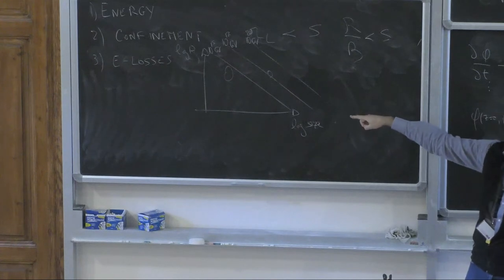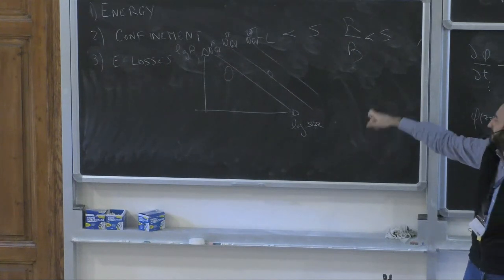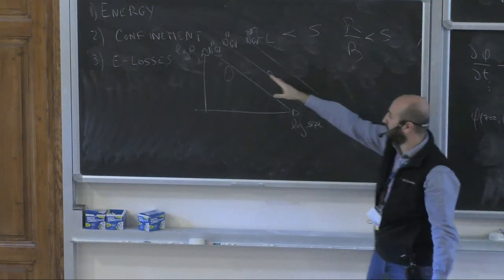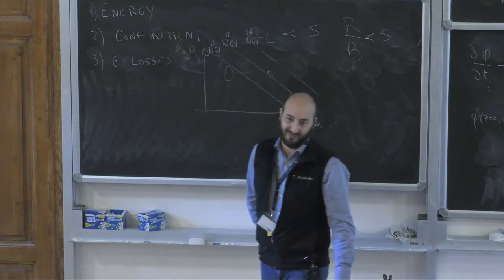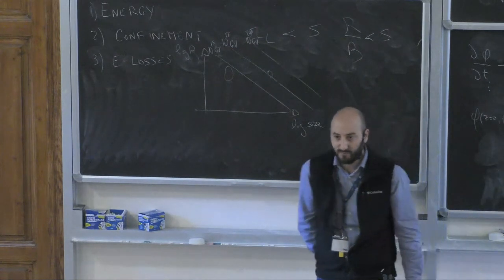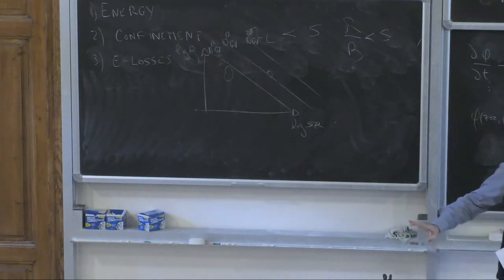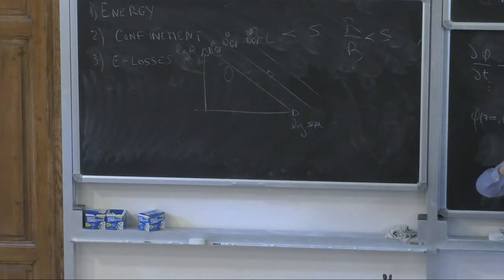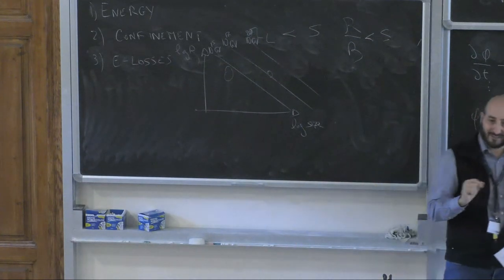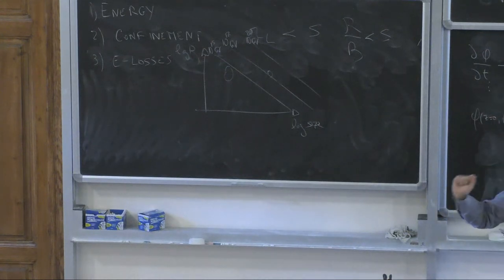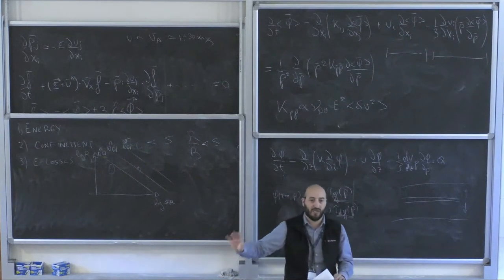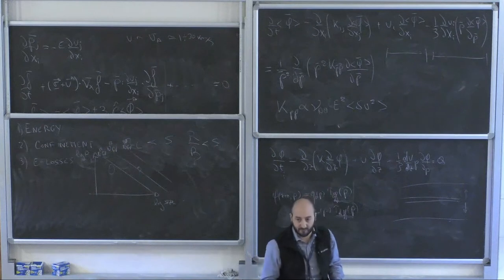For supernova remnants, the product B times S naively falls below the line of roughly 10^16 eV. Since we observe cosmic rays up to 10^20 eV, supernova remnants are probably adequate for the bulk of low-energy cosmic rays measured by AMS, but seem to fall short for very high energy cosmic rays. Ultra-high-energy cosmic rays measured by Auger or telescope arrays probably come from some other type of object.